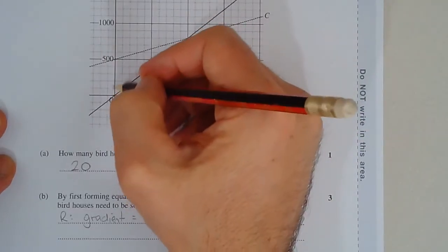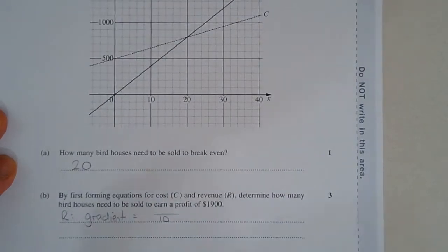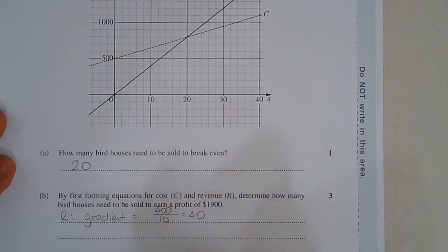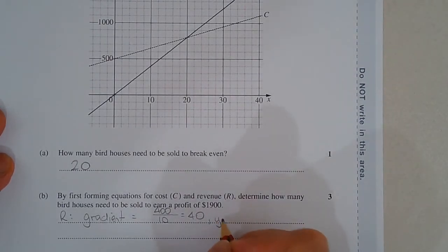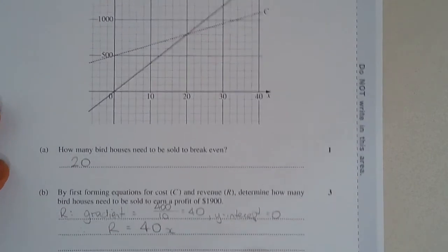And the rise is 400. So if you go up from the y-axis, it goes up in steps of $100. So that's going to be 400. So the gradient is 40. Y-intercept is 0. Therefore, revenue is equal to 40x.